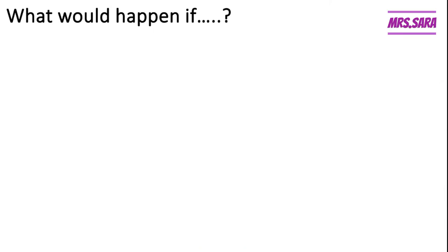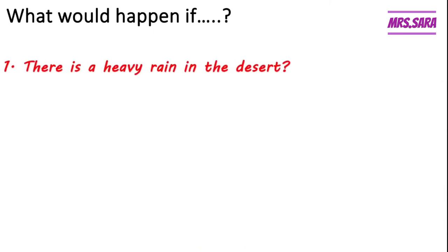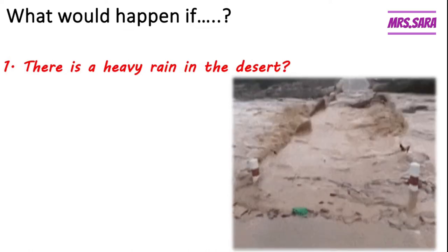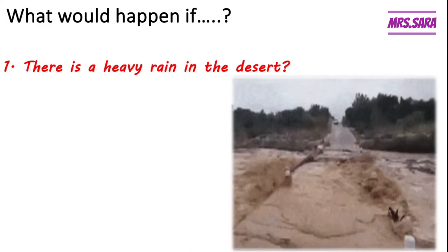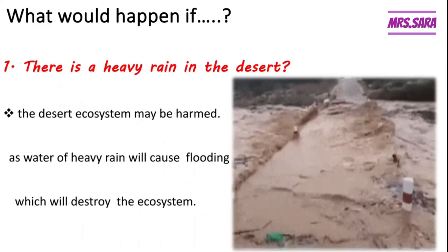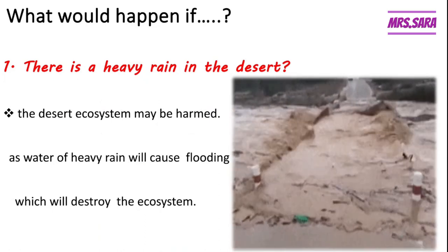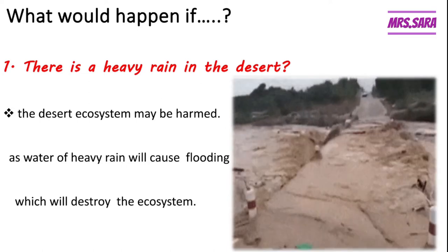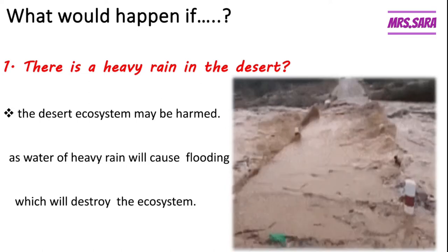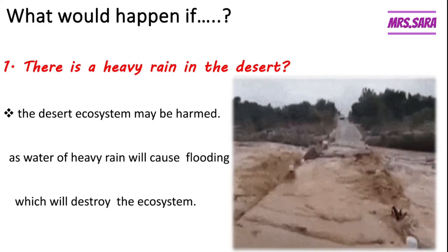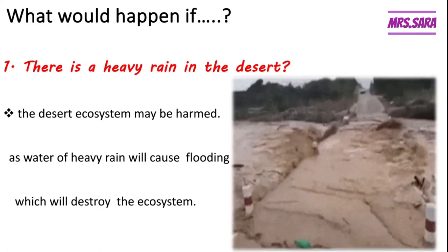What would happen if there is a heavy rain in the desert? The desert ecosystem may be harmed as the water of the heavy rain will cause flooding, which will destroy the ecosystem. So the flooding or the heavy rain will destroy this ecosystem.